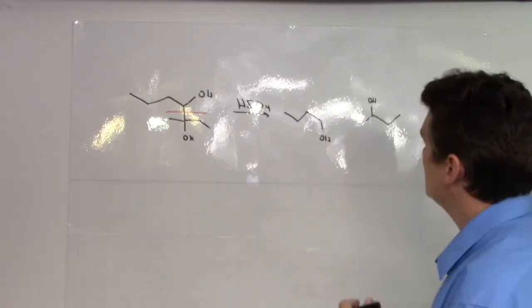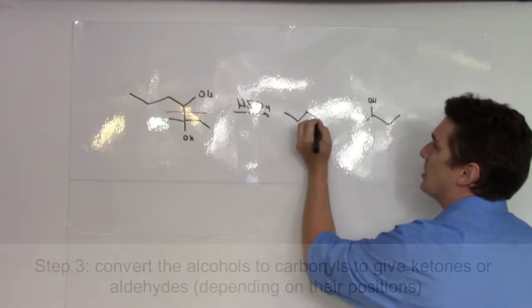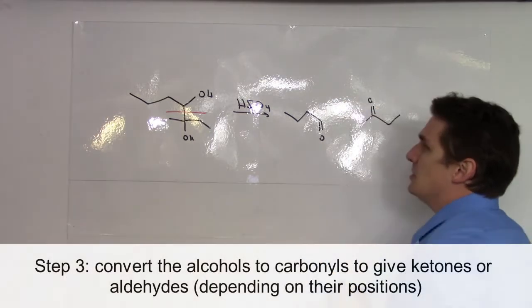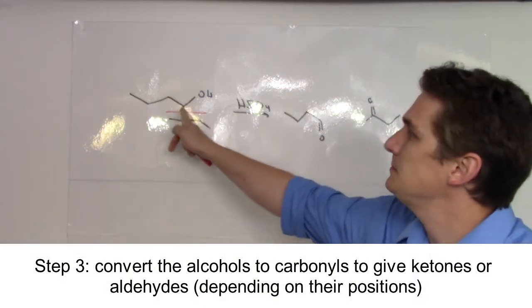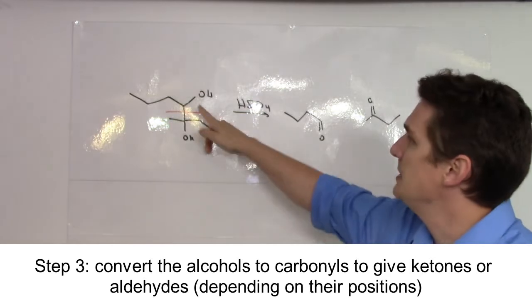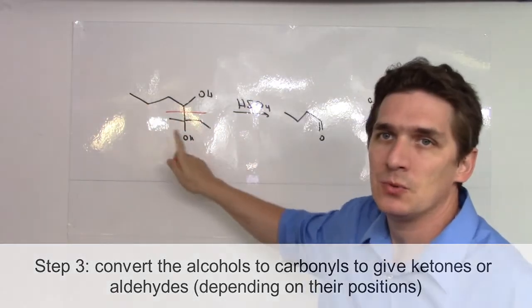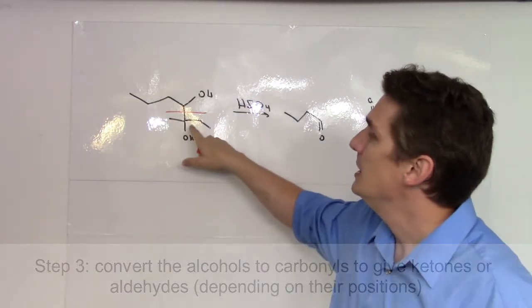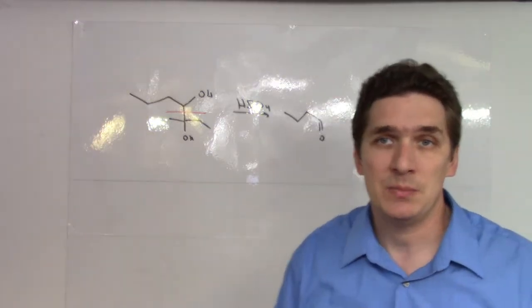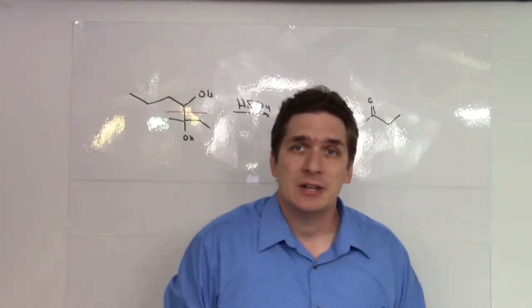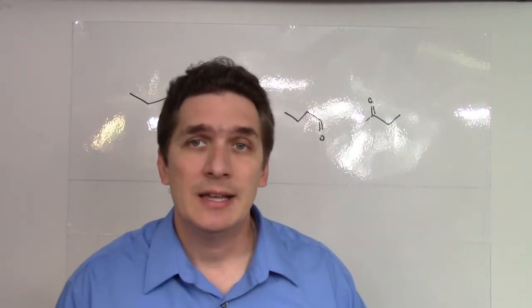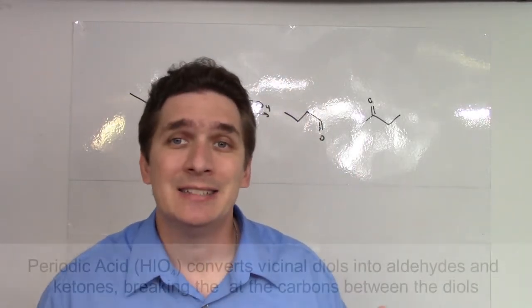What you end up doing is taking these alcohols and forming an oxygen carbon double bond. Because this OH group is on the end of this chain, we end up forming the aldehyde with one part. And because this alcohol is not on the end of the chain, we end up getting the ketone. So periodic acid, HIO4, is actually going to break diols into aldehydes and ketones.